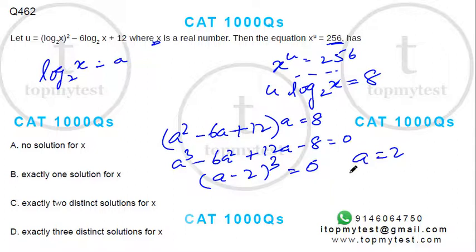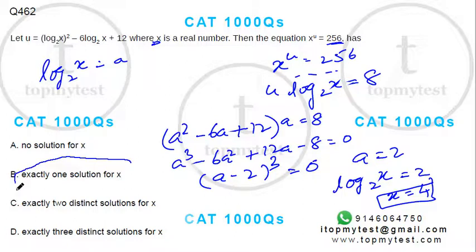That is one unique solution. In other words, log x to the base 2 equals 2, so x equals 4. That's the only solution for this entire equation. Exactly one solution - option B is your correct choice. That finishes this question.